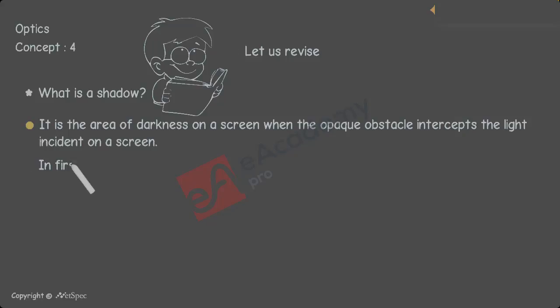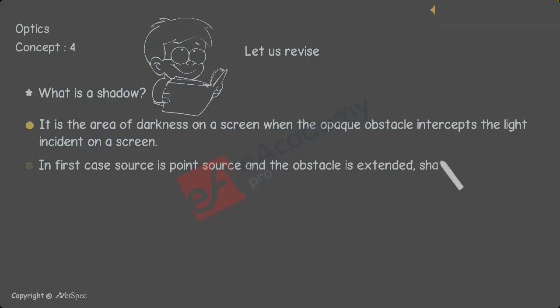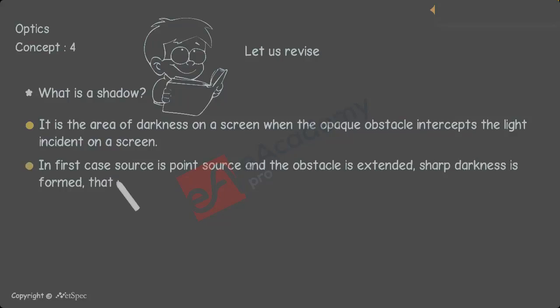In the first case, the source is a point source and the obstacle is extended. Sharp darkness is formed, i.e. umbra.